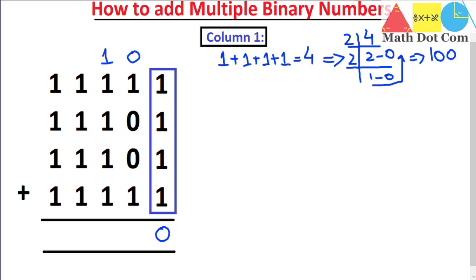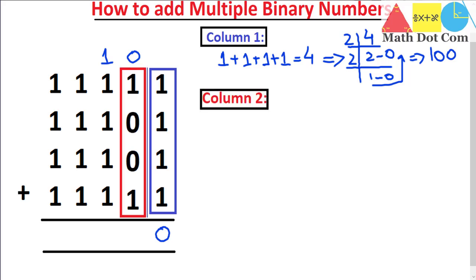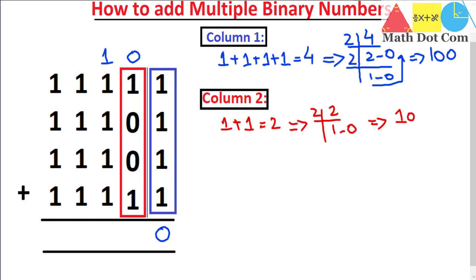We move to column two, adding from right to left. Column two is shown in the red rectangle. Here we have one plus one, and the remaining bits are zeros, so one plus one equals two. Again, two is not a binary digit, so we convert it to binary by dividing by two: two ones are two, remainder zero. The binary equivalent of two is 10. So we write zero in column two and carry the one to the next column.